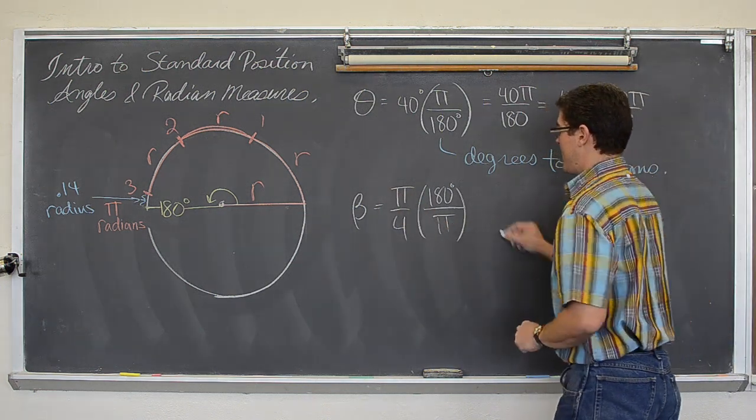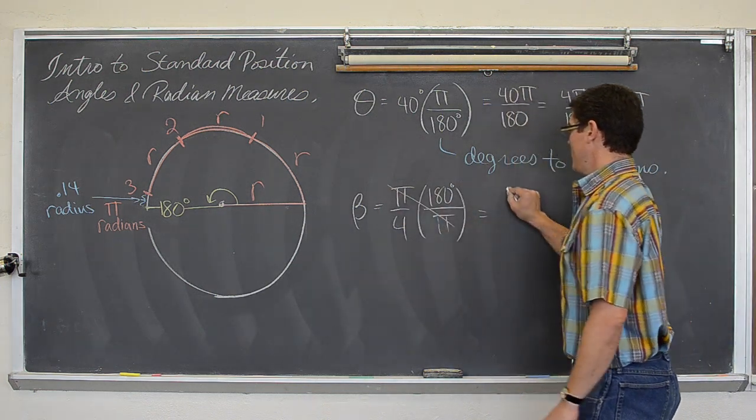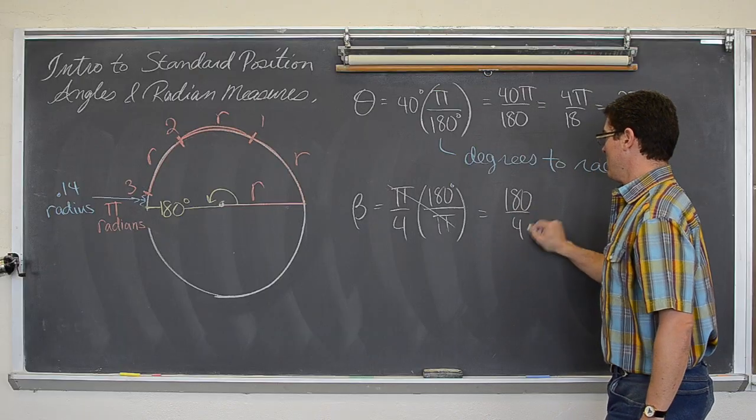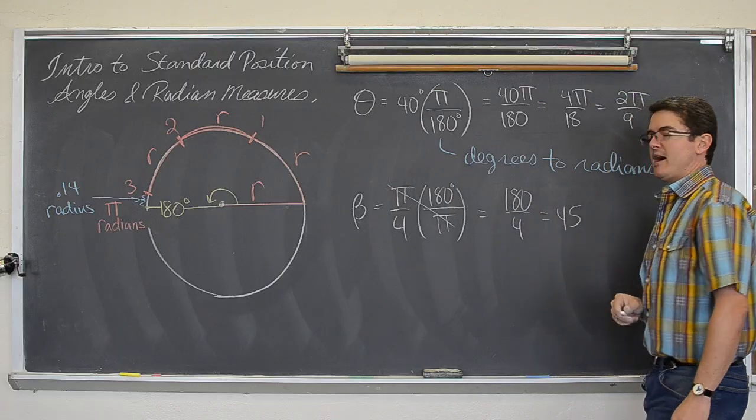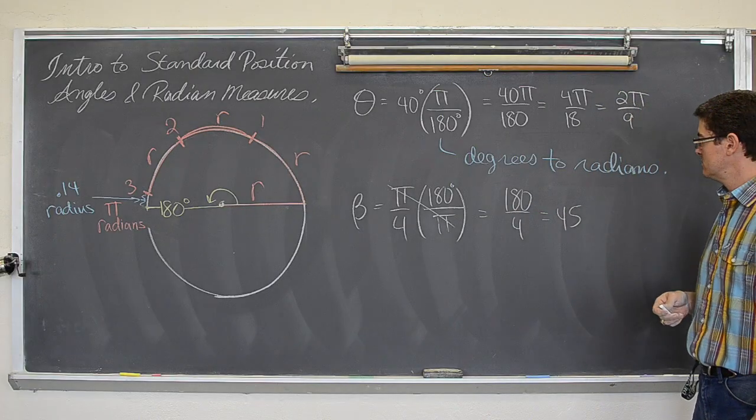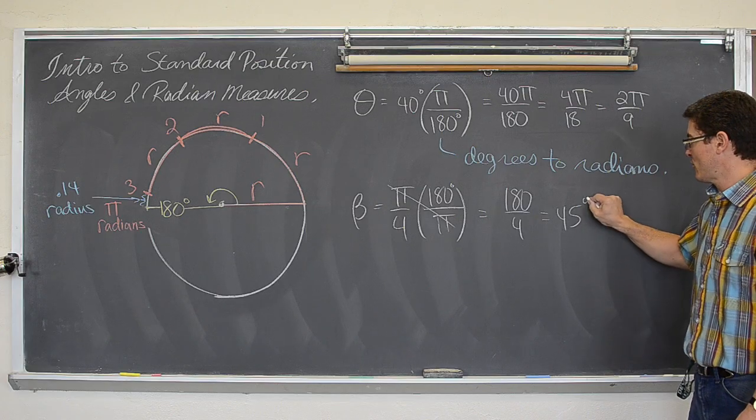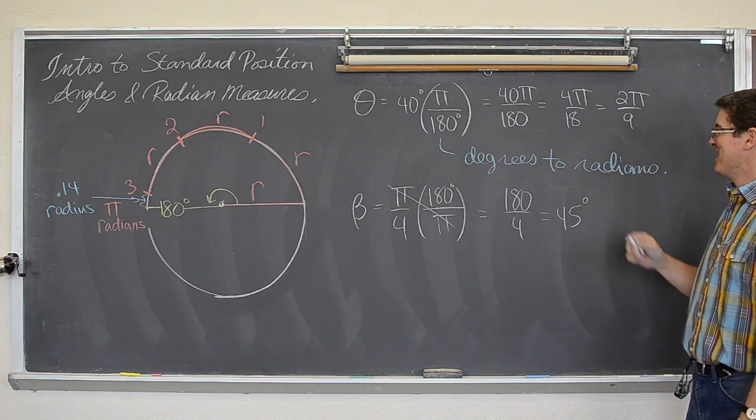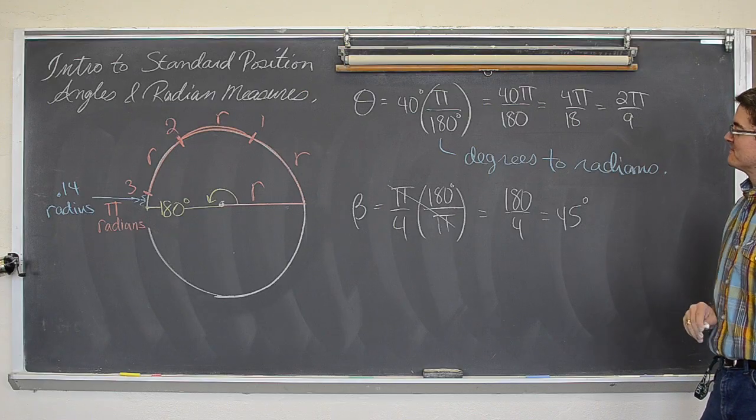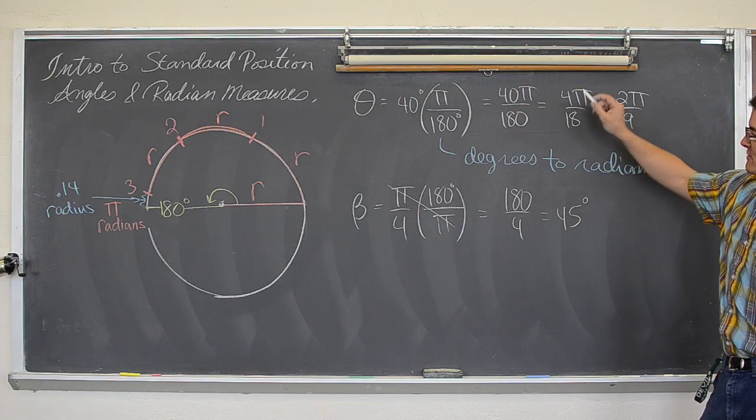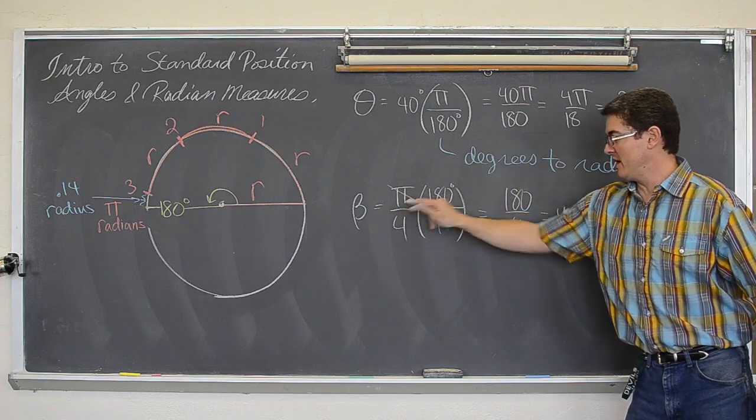The pi's will cancel out and you get 180 over 4, which comes out to be 45 degrees, right? Oh wait a minute, I just wrote 45 radians. No, no, no, 45 degrees. Okay, so there you go. Okie dokie. So that is converting from degrees to radians and radians to degrees.